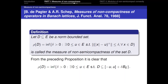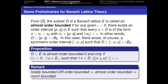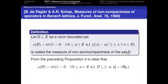We are now ready to give the results from Schap's paper. They defined in 1988 the measure of non-semicompactness of a norm-bounded set D as follows: the infimum of δ such that there exists a positive u where ‖(|x| − u)₊‖ ≤ δ for all x in D. From the preceding proposition, we can re-express the measure of non-semicompactness as the smallest δ such that D is placed in an order interval plus δ times the unit ball.